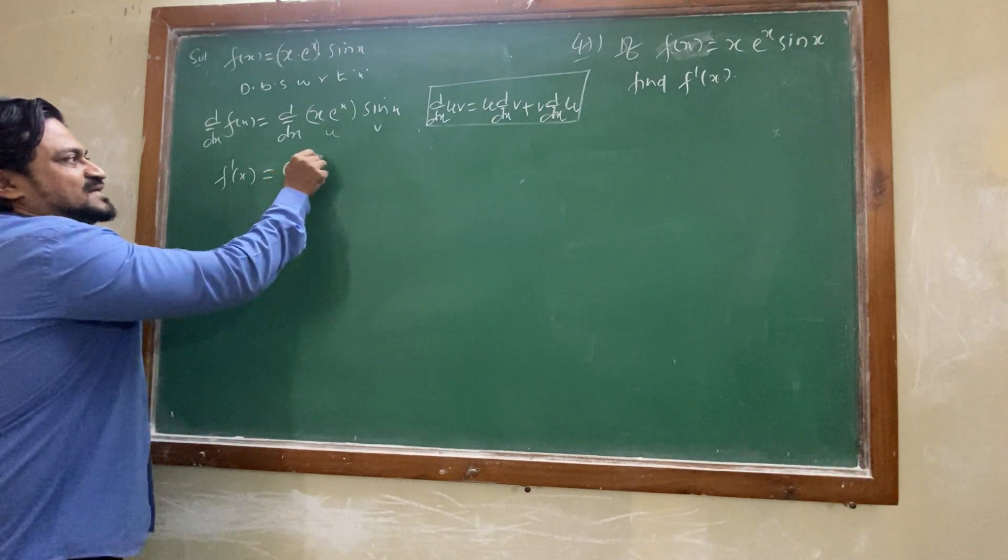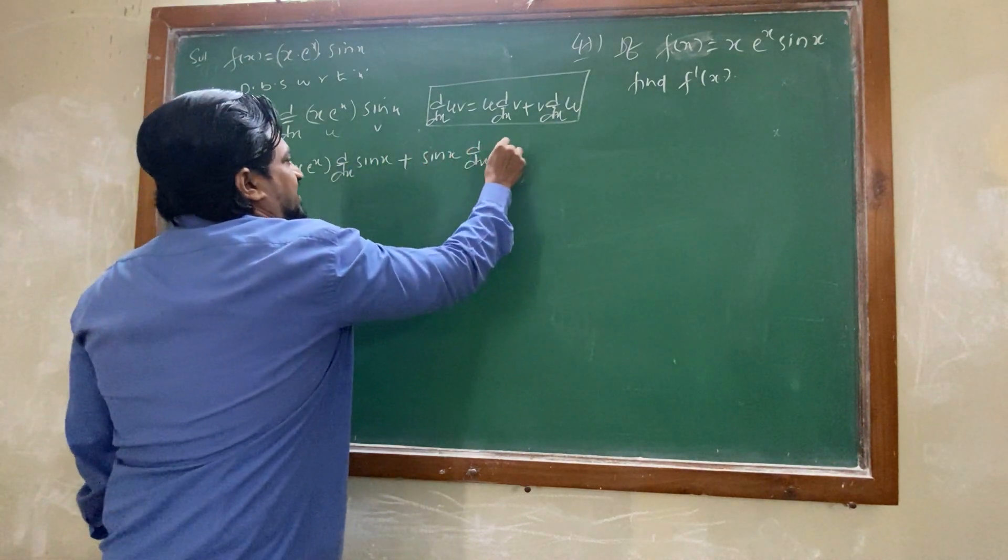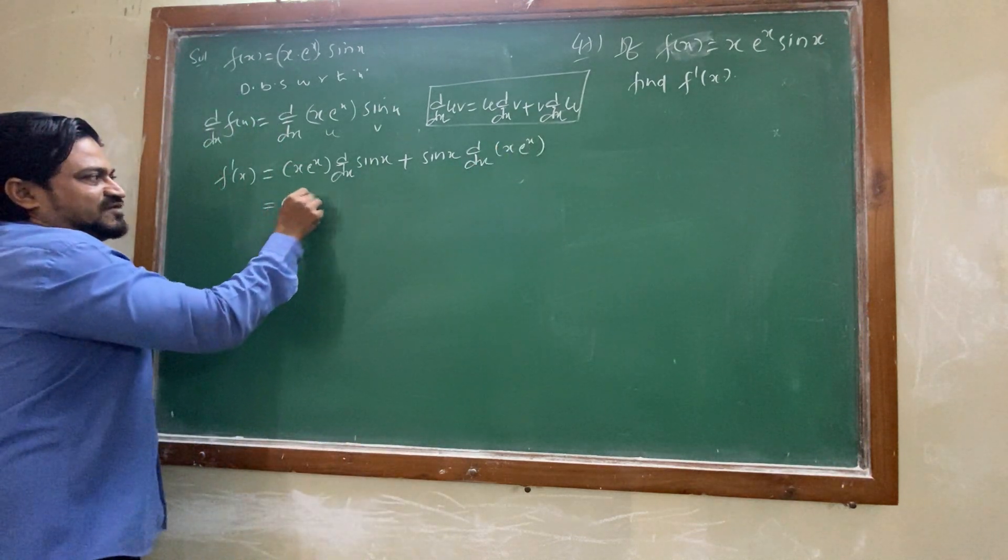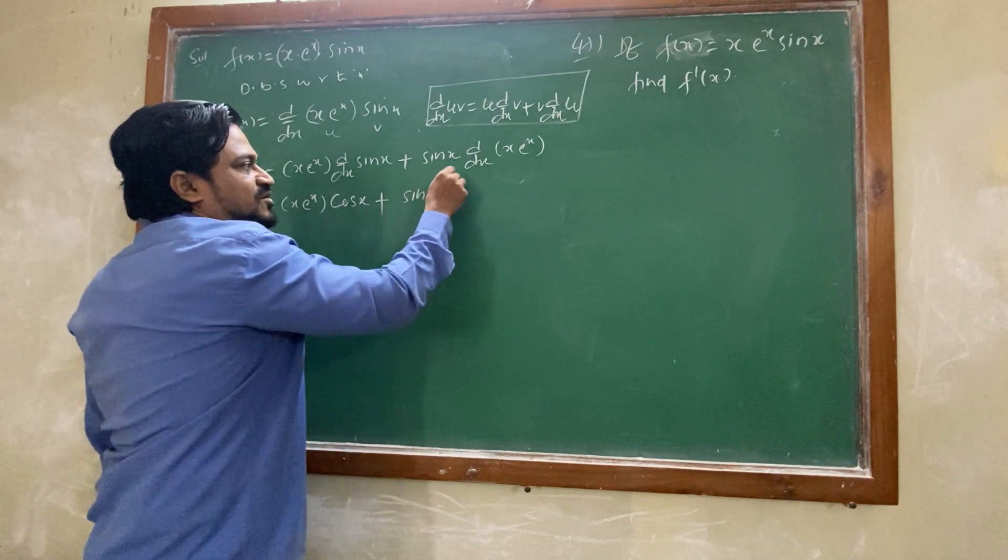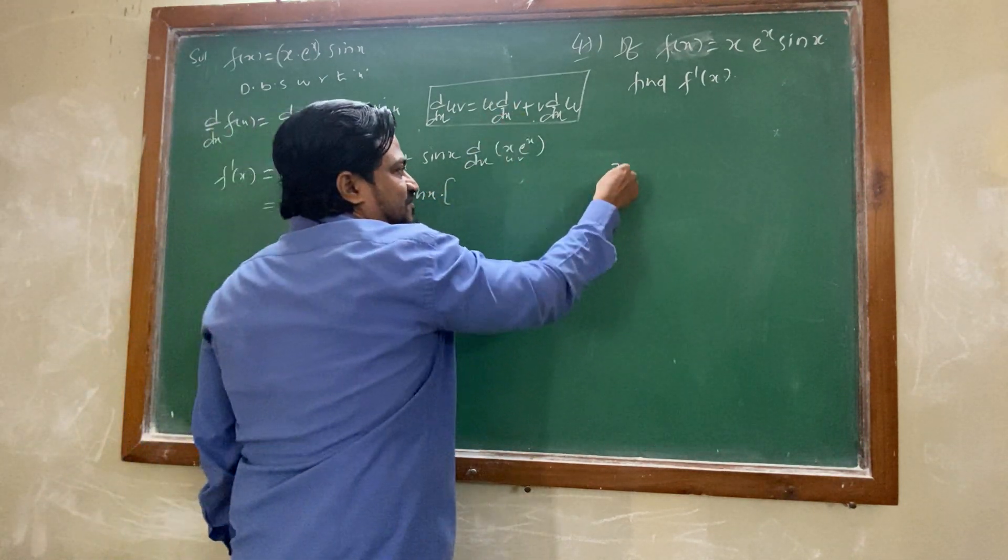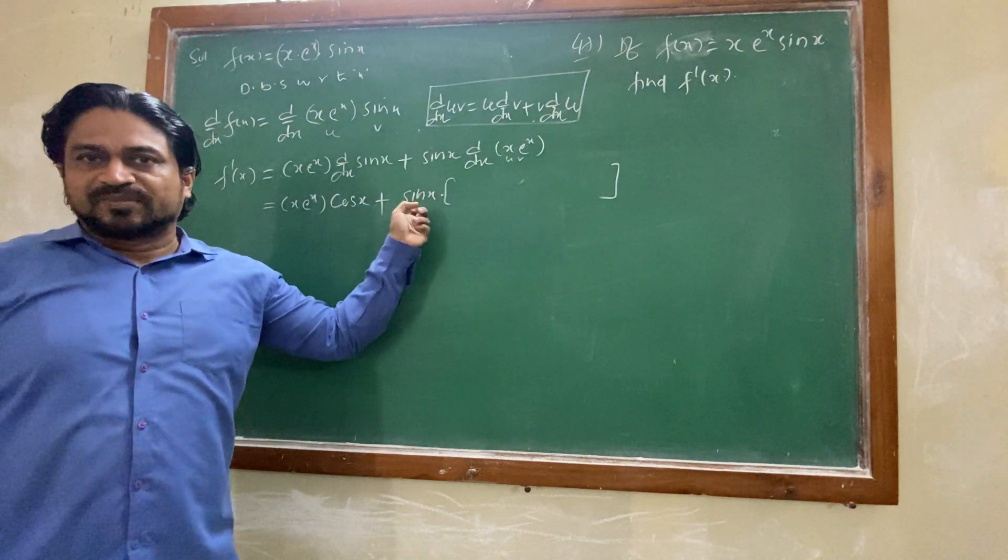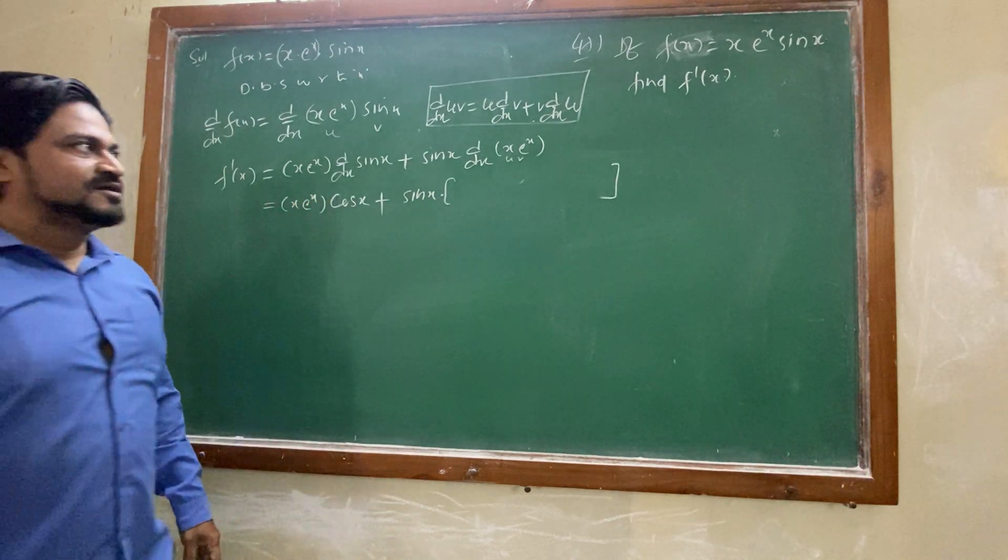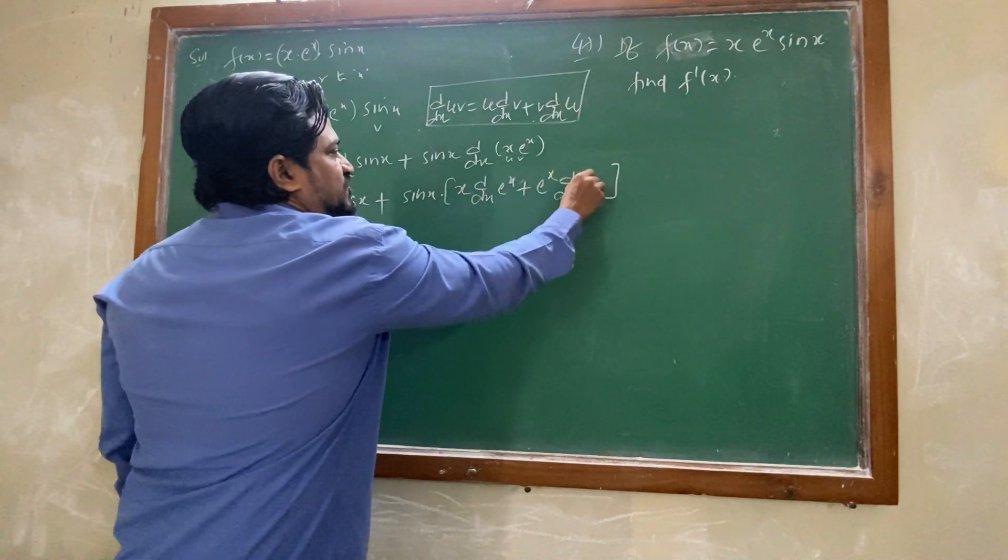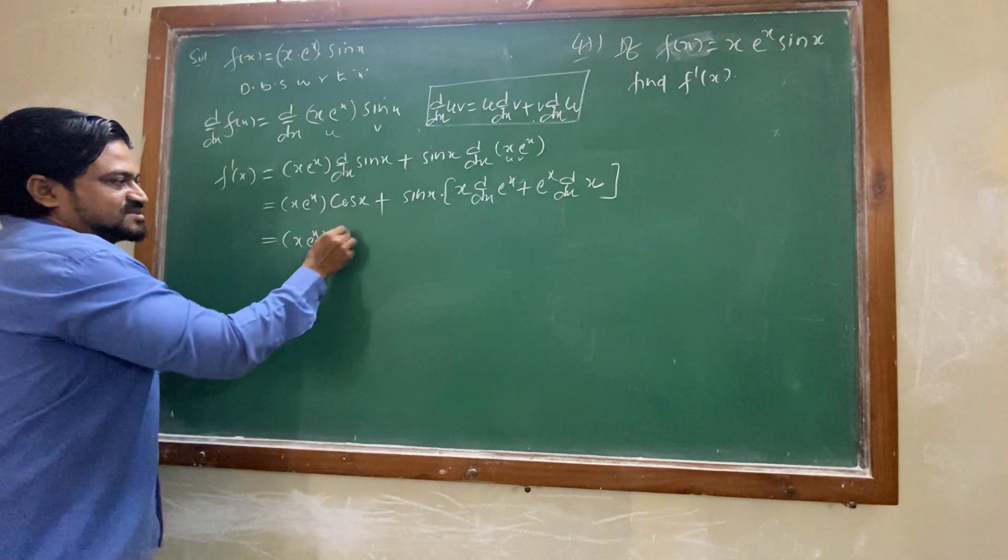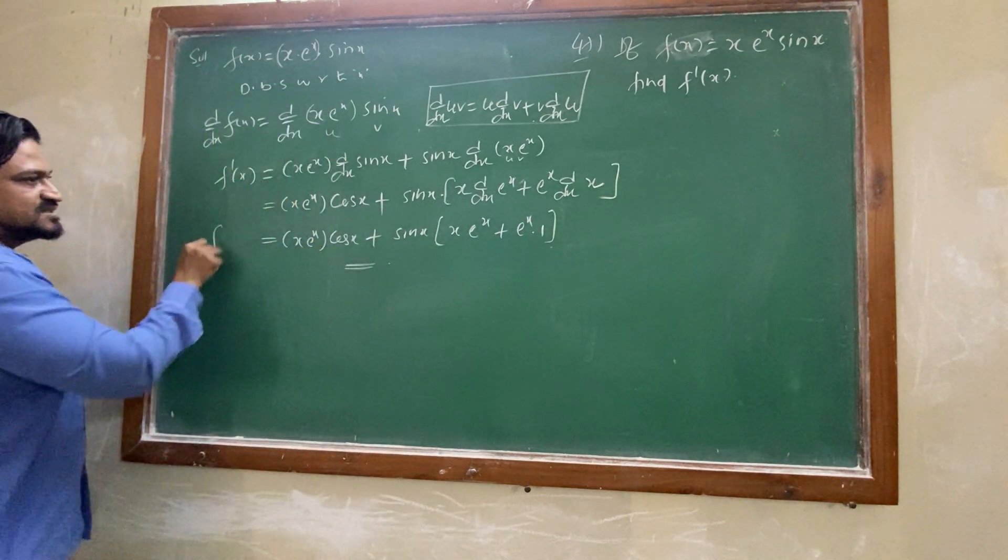So whatever u, that bracket as it is you should write. D by dx of then v value, plus v value, d by dx of that bracket part x into e power x. Now this one does not have u, v. D by dx, sine x derivative is cos x. Sine x into, when d by dx of two more terms, again u will be forming this one. Taking bracket so that this whole bracket is multiple of sine x. If you not take bracket, then the whole thing is not multiple of sine. So u, what is u? X. D by dx of v, plus v, d by dx of u. Now this will be x into e power x into cos x plus sine x into x into e power x plus e power x into 1. This is f dash of x.